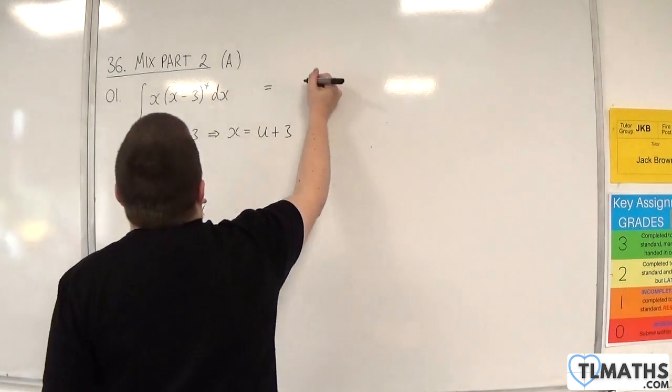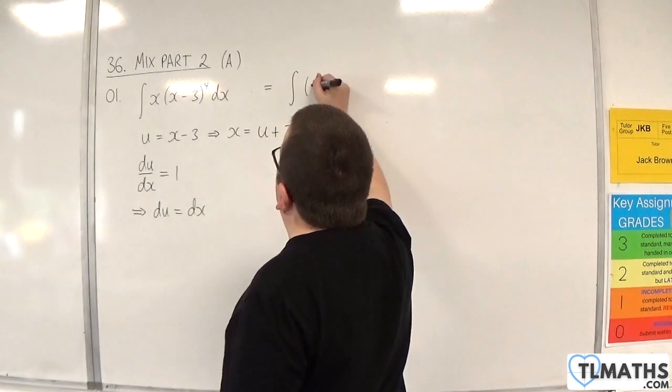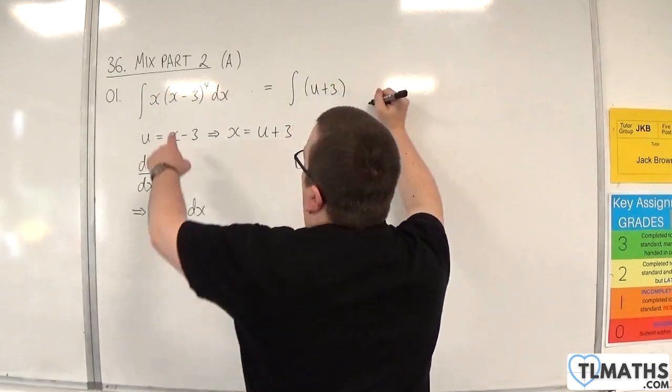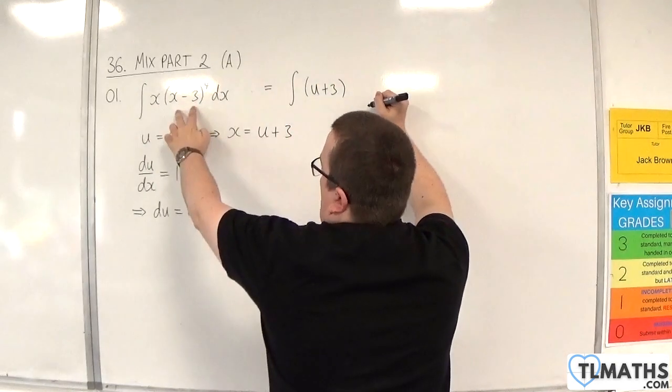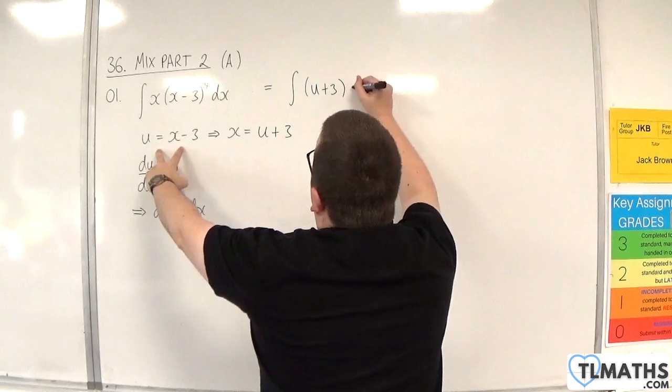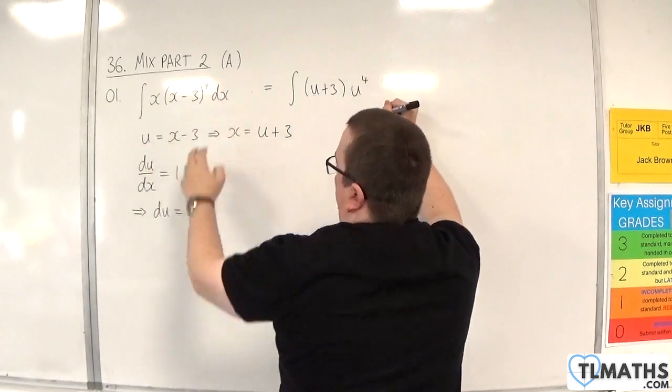So we now have the integral of u plus 3, so that's what I'm replacing the x with, the x take away 3 is u, so u to the 4, the dx is replaced with du.